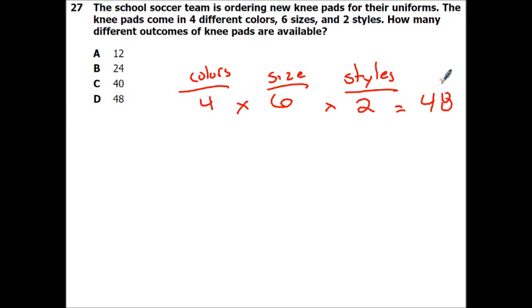The school soccer team is ordering new pads for their uniforms. The knee pads come in 4 different colors, 6 sizes, and 2 styles. How many different outcomes of knee pads are available? So this is just the counting principle. So for colors we have 4, for sizes we have 6, and styles we have 2. So remember, with the counting principle, all you have to do is multiply the number of possibilities in each situation. So 4 times 6 is 24, 24 times 2 is 48. So we have 48 different possible situations we can do with all those.